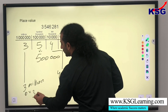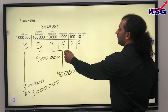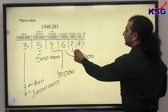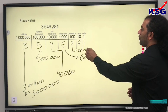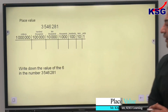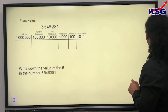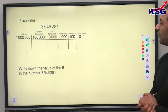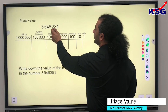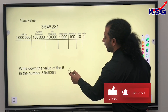The value of 6 in this number is six thousand, the value of 2 is two hundred, and the value of 8 is eighty. There is a question: write down the value of 6 in the number. The digit 6 sits in the thousands column, so the value of 6 in this number is six thousand.